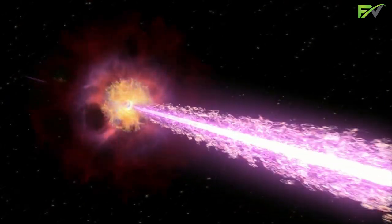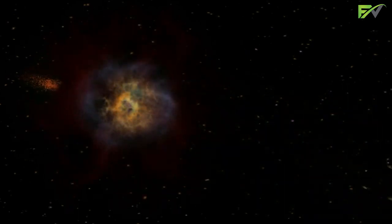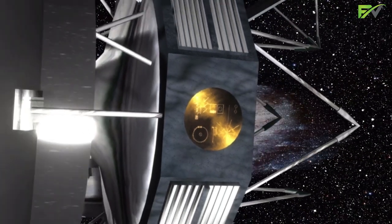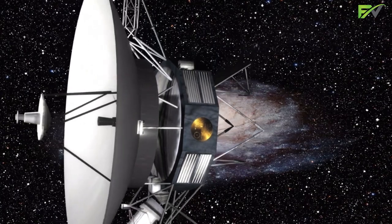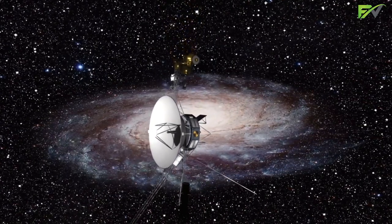Gamma-ray bursts are the most powerful class of explosions in the universe, and Voyager 1, which was launched in 1977, identified more than 10,000 gamma-ray bursts during its journey.